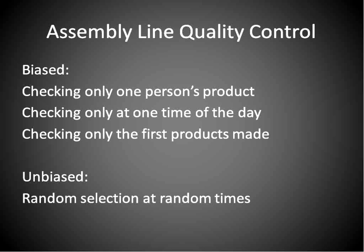If you're checking the quality on an assembly line, some biased ways would be to only check one person's product, or to check only at one time of the day, or to check only the first products that were made — those are examples of biased samples. An unbiased sample would be to randomly select at random times, so you get more of an overall feel of how the product is doing. If you're grabbing ten products, you want to grab ten randomly throughout the day, made by random people at random times, and that would give you more of an idea of what's happening overall on the assembly line.